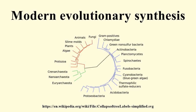Thomas Hunt Morgan began his career in genetics as a Saltationist, and started out trying to demonstrate that mutations could produce new species in fruit flies. However, the experimental work at his lab with the common fruit fly Drosophila melanogaster, which helped establish the link between Mendelian genetics and the chromosomal theory of inheritance, demonstrated that rather than creating new species in a single step, mutations increased the genetic variation in the population.